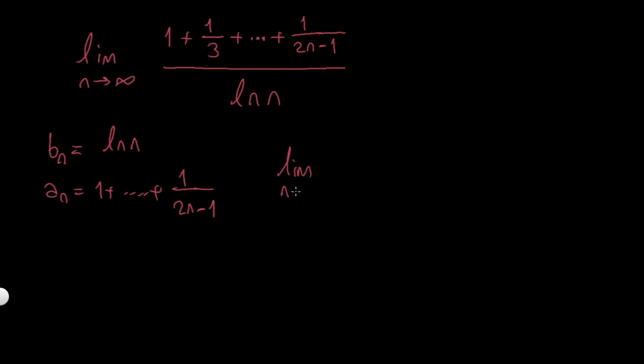limit as n goes to infinity, a(n+1) minus an over b(n+1) minus bn.